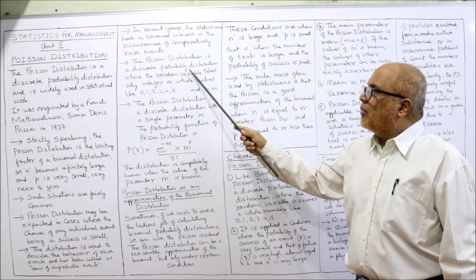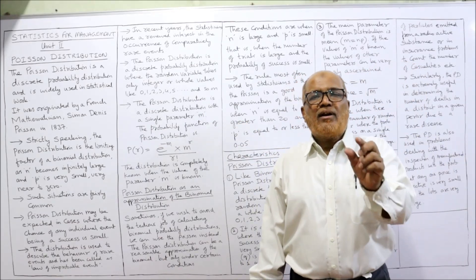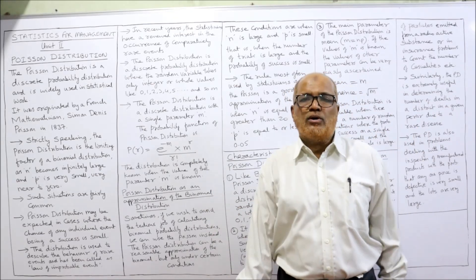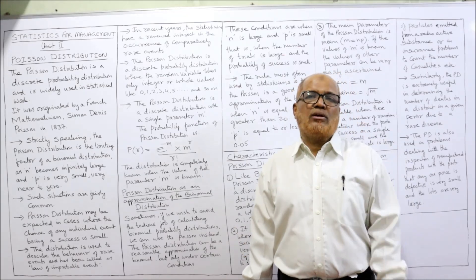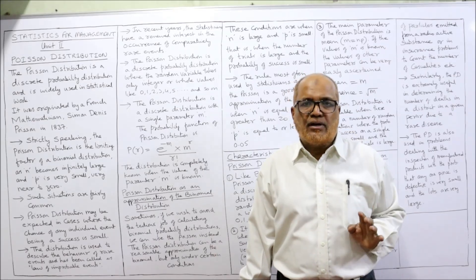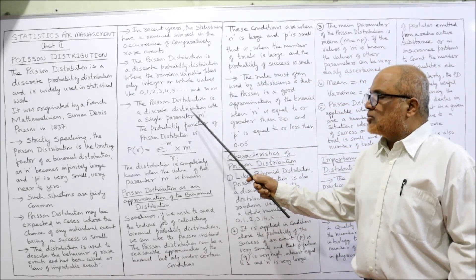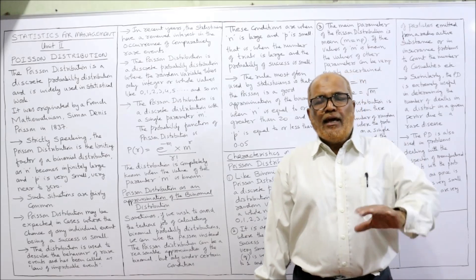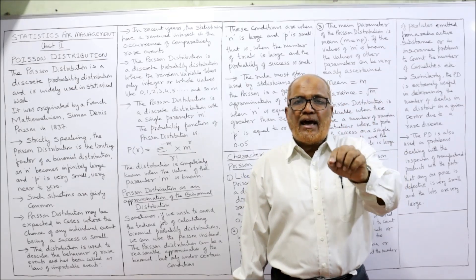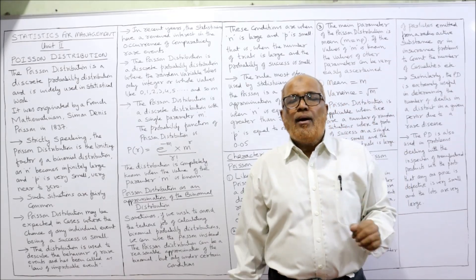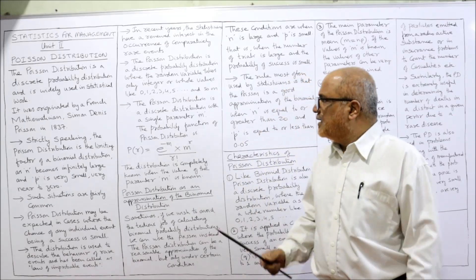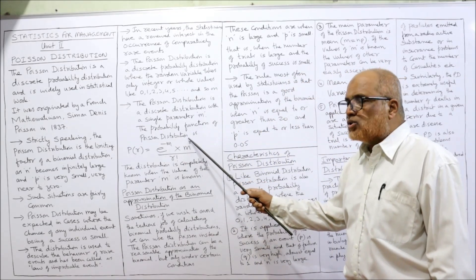Poisson distribution is a discrete probability distribution. Whenever the r value is in whole numbers — 0, 1, 2, 3, 4 — then only we can apply Poisson. If the r value is a fraction, we cannot apply Poisson distribution. The Poisson distribution is a discrete distribution with a single parameter m. In binomial distribution, the parameters are n and p — we require both separately. But in Poisson distribution, the parameter is a single factor, that is m. The probability function of the Poisson distribution is different from binomial.